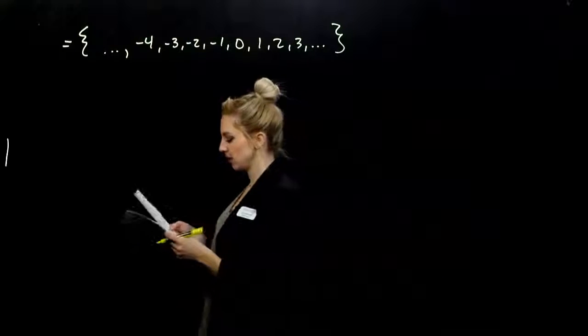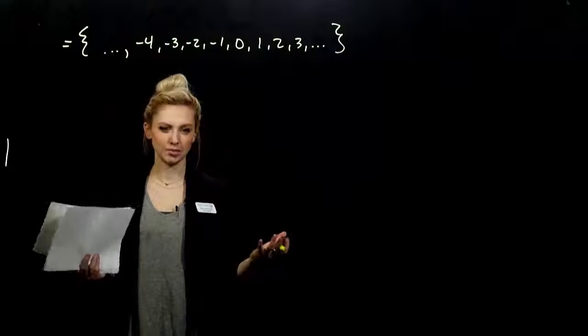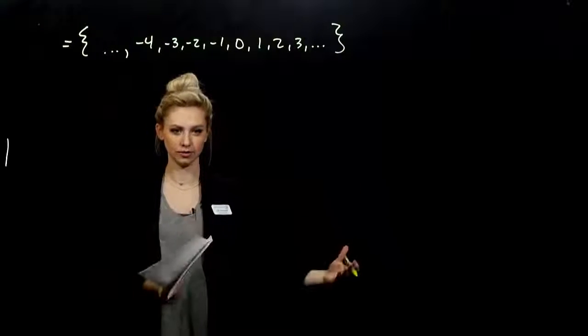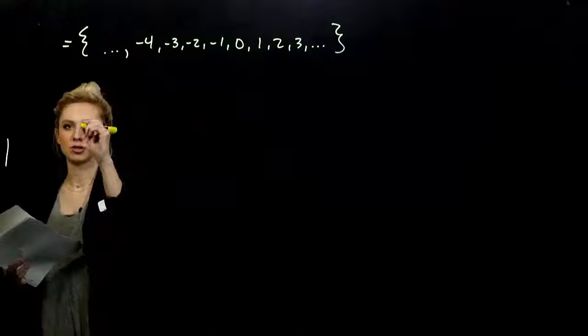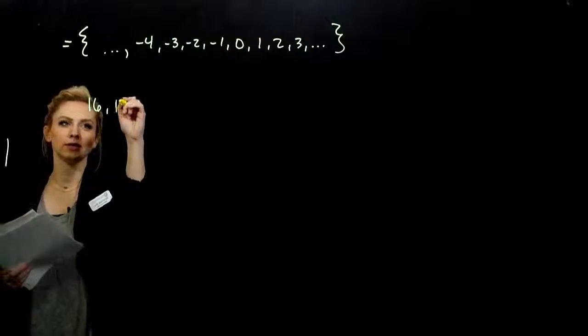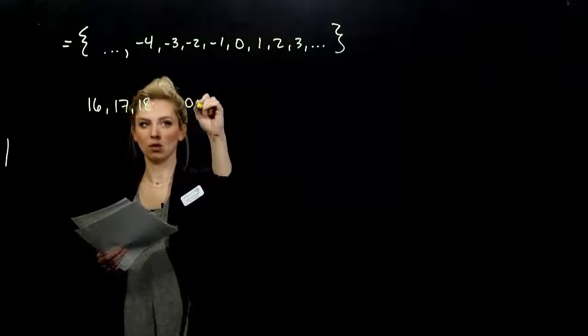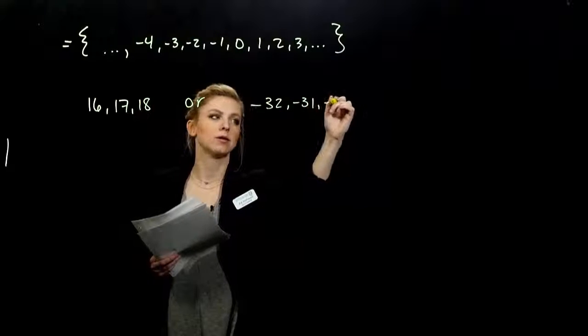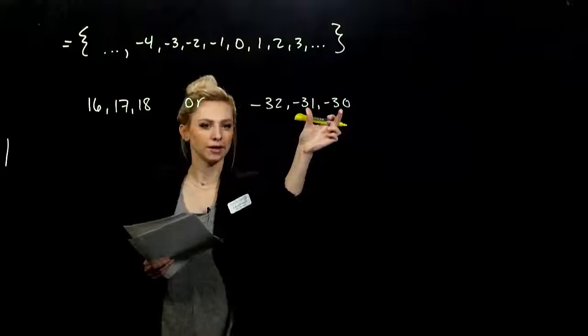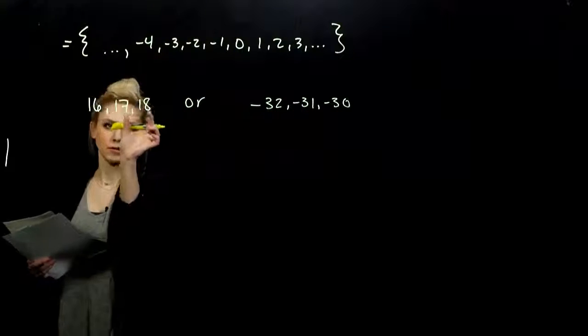So what does it mean to be a consecutive integer? Consecutive just in general means one right after the other or right next to each other. So some consecutive integers would be like 16, 17, 18, or even negative: minus 32, minus 31, minus 30. They're all right next to each other. So these guys are consecutive, these ones are consecutive.